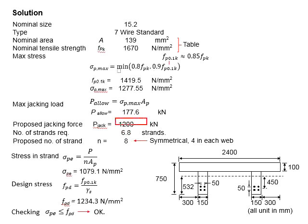Based on 8 strands in the member, the total jacking force is 1200 kN. We can calculate the stress in each strand, which is calculated by dividing 1200 by 8 strands and by the cross-sectional area. The stress in each strand is calculated here.